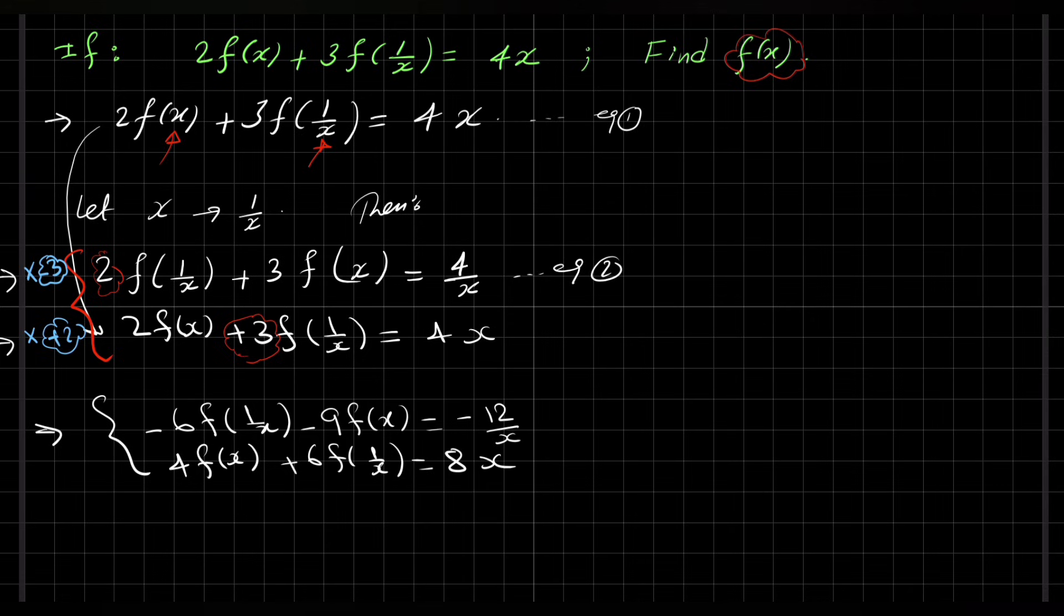Now if we add these two equations, the -6f(1/x) and +6f(1/x) add up to 0. And 4 plus -9, so this is -5f(x) equal 8x minus 12/x.